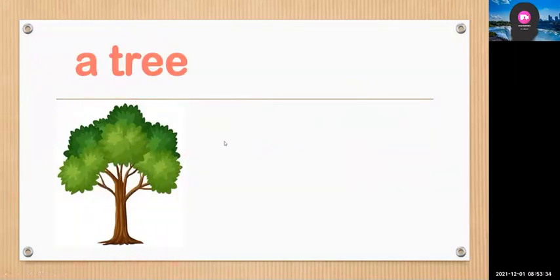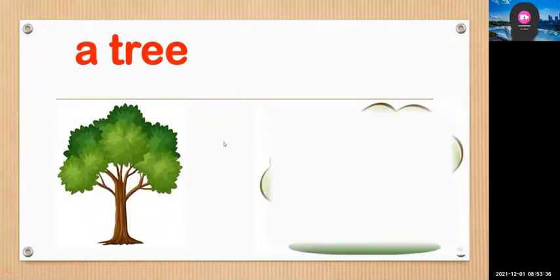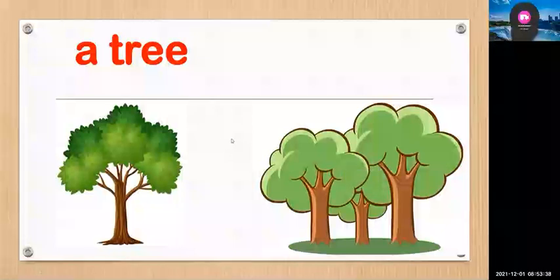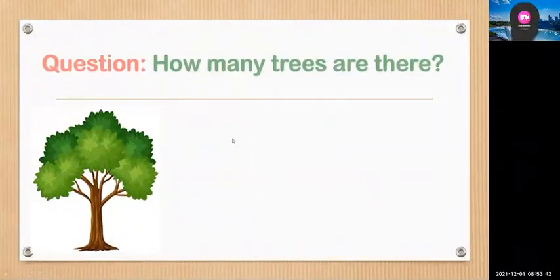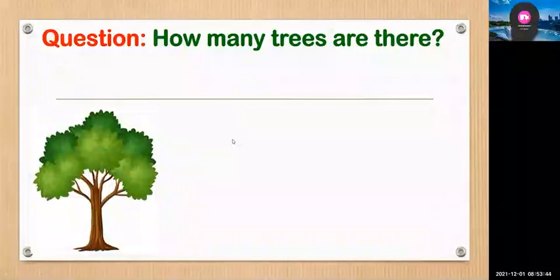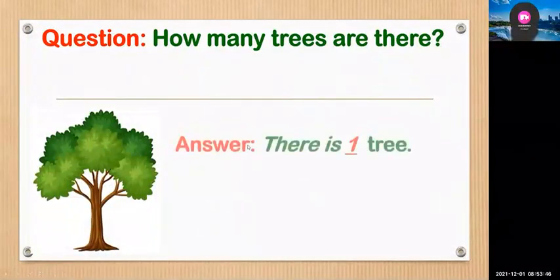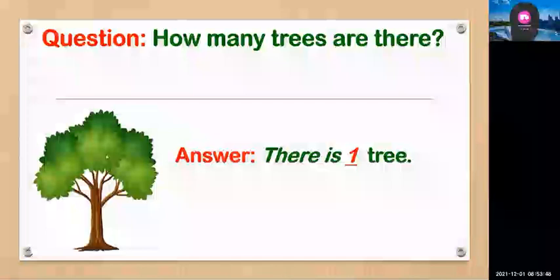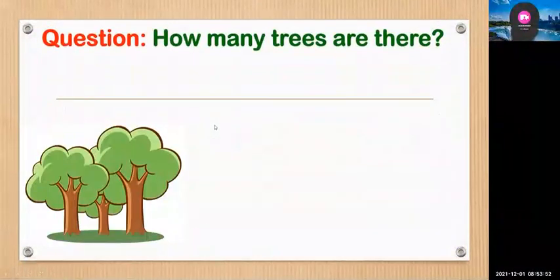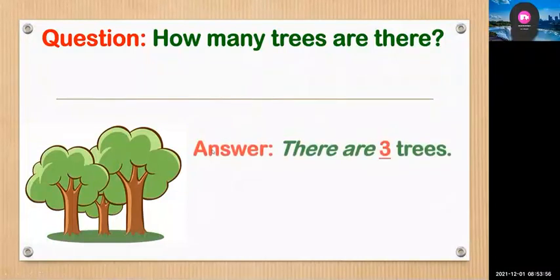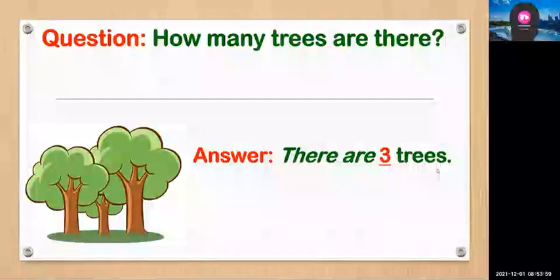Next: a tree. Trees. How many trees are there? There is one tree. How many trees are there? There are three trees.